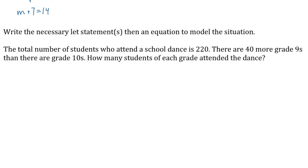So this is the kind of question that we're going to eventually be setting up and solving. But for this one, we're just writing let statements and the equation. The total number of, although the solving is probably not going to be the hard part. So if you had to do that, you could. Write the necessary let statements, then an equation to model the situation. Now, the total number of students who attend is 220. There are 40 more grade nines than there are grade tens. How many students of each grade attend the dance? In word problems, throughout high school math, almost all the time. Not quite all the time, but almost all the time. Your let statement is going to be, let A represent the thing you're trying to find. Now, we're trying to find the number of grade nines and tens. So you just pick. So let A represent the number of, do you want to do grade nines or tens? Grade nines.